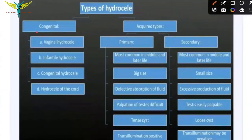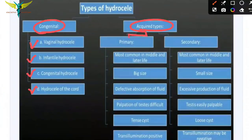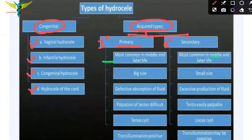The main classification of hydrocele is congenital and acquired. Under congenital we have vaginal hydrocele, infantile hydrocele, congenital hydrocele, and hydrocele of the cord. Acquired is further divided into primary and secondary. Both primary and secondary acquired hydrocele are most common in middle age or later life.